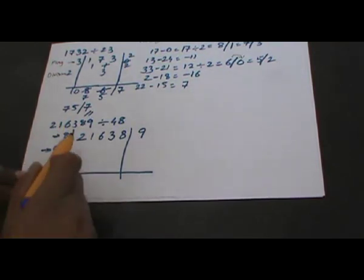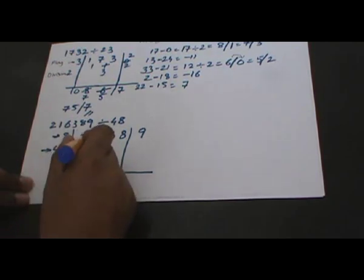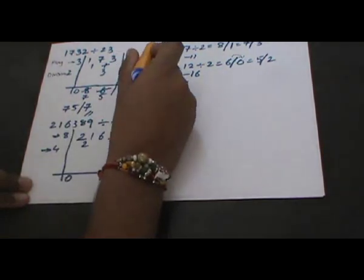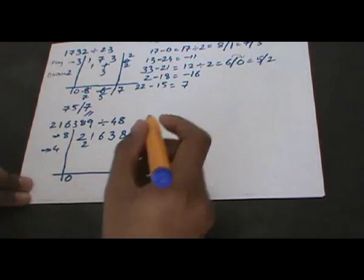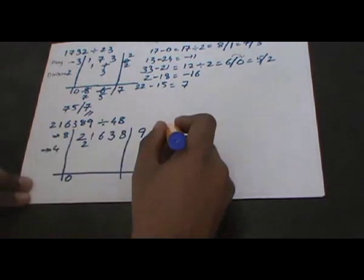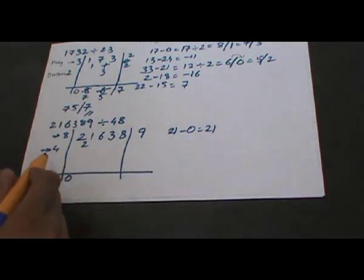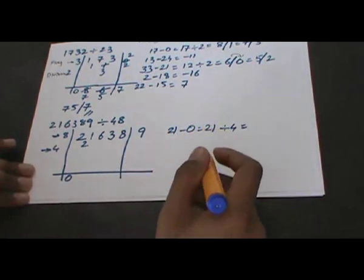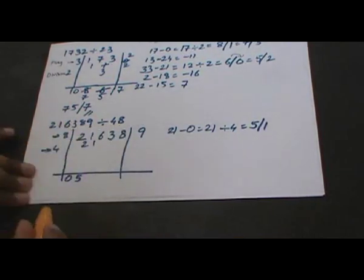The first number is 2, which will be divided by 4, giving quotient as 0 and remainder as 2. We follow the MSD process: 0 multiplied by 8 gives 0, subtracted from 21 gives 21, and 21 will be divided by 4, giving quotient as 5 and remainder as 1.